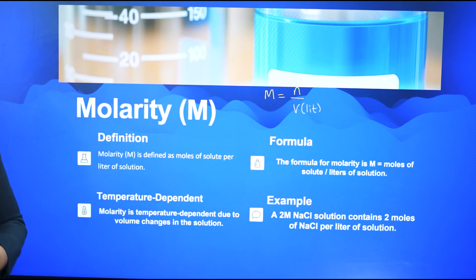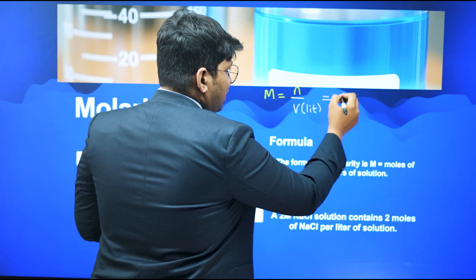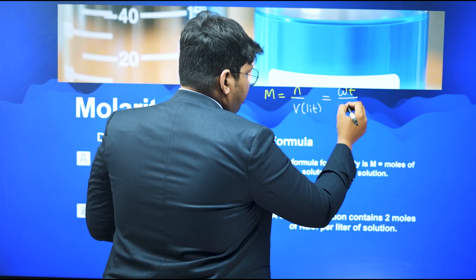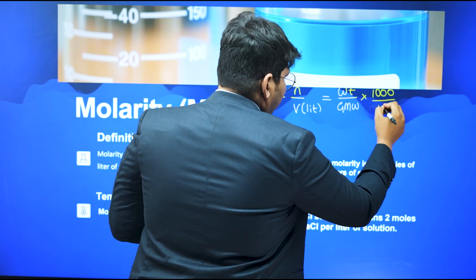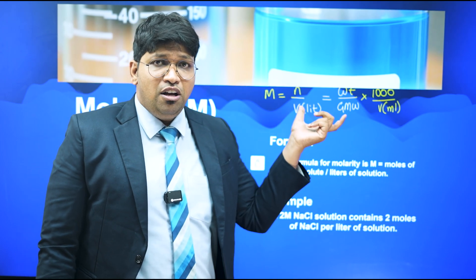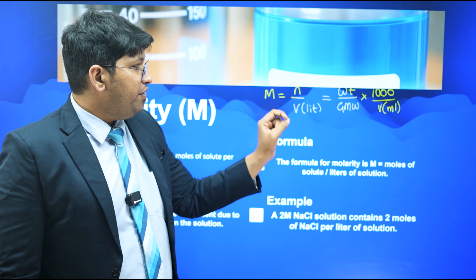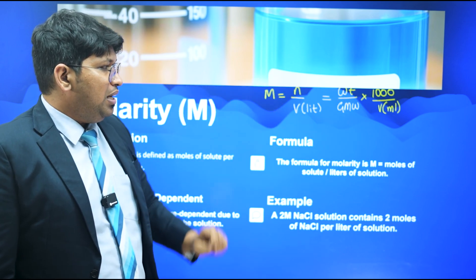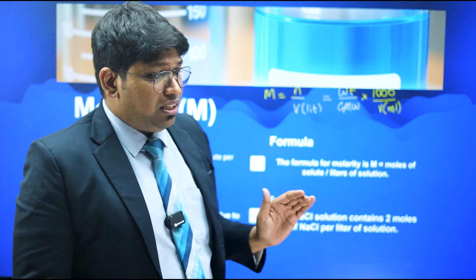Since molarity involves number of moles, an important relationship is: M = (weight / molar mass) × (1000 / V in mL). This is a very important relationship. Also, molarity is always temperature dependent because it is a volume parameter — when temperature increases, volume increases, and when temperature decreases, volume decreases.